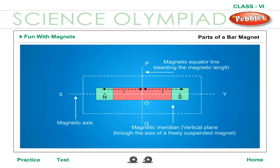The magnetic equator is an imaginary vertical line PQ dividing the bar magnet into two equal parts. The effective length is the distance between the magnetic north pole and the magnetic south pole. The length of a magnet is the distance between the center of the magnet and one pole.